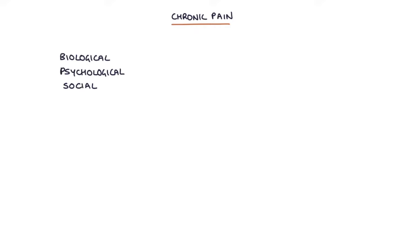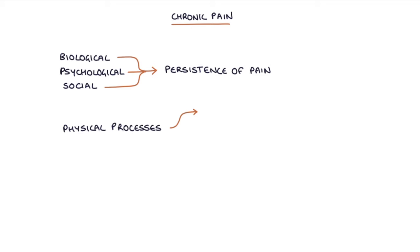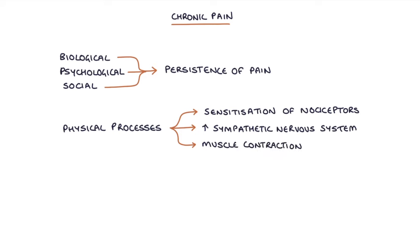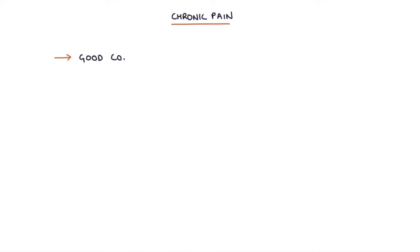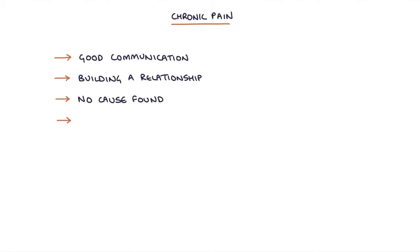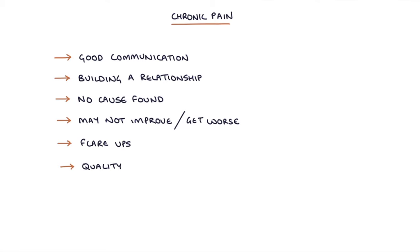Biological, psychological, and social factors all contribute to the persistence of pain. Physical processes that can lead to chronic pain include sensitization of the primary afferent nociceptors by frequent stimulation, increased activity of the sympathetic nervous system, and increased muscle contraction in response to pain. Chronic pain is a complex condition that can be challenging to manage. Analgesia is often inadequate and can lead to side effects and dependence. Good communication and building a relationship with the patient is an important part of managing chronic pain. Chronic pain may not improve and may get worse with time, and often fluctuates with flare-ups.